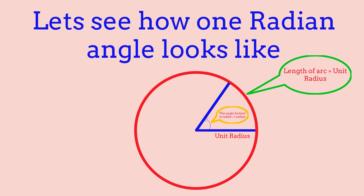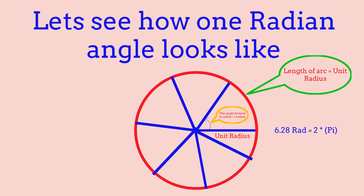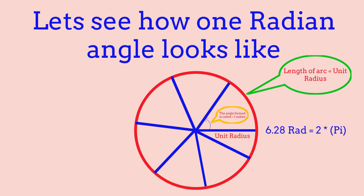So how many radians will actually fit into a full circle? If you keep putting the radius along the circumference, at the end you'll have 6.28 radians. This will work for any type of circle, whether it's small or huge — it will always be 6.28 radians.